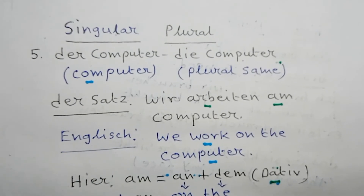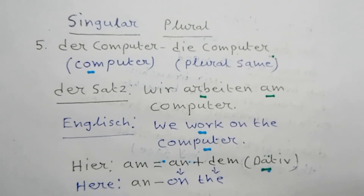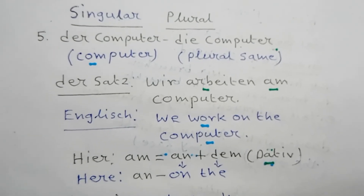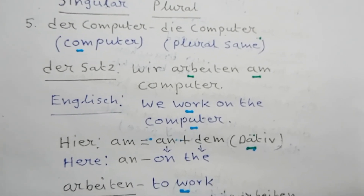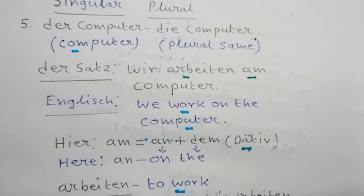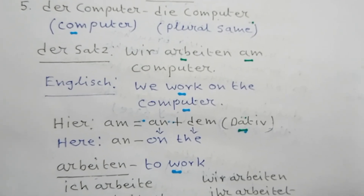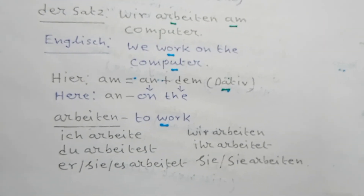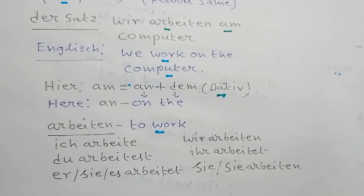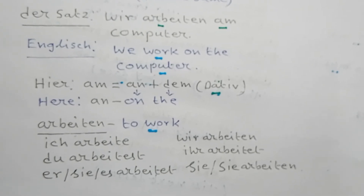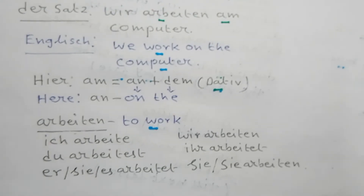Number five: Der Computer, plural die Computer. English meaning: computer. Now German sentence: Wir arbeiten am Computer. English: We work on the computer. Here 'am' is 'an' plus 'dem', dative form, meaning 'on the'. Arbeiten means 'to work'. Conjugation: ich arbeite, du arbeitest, er/sie/es arbeitet, wir arbeiten, ihr arbeitet, Sie arbeiten.